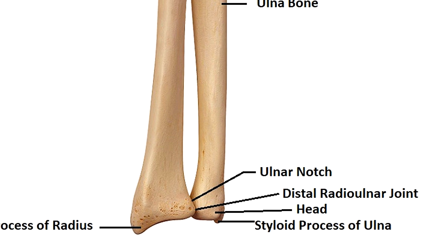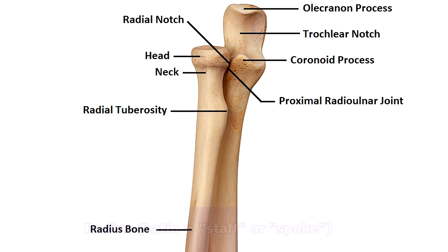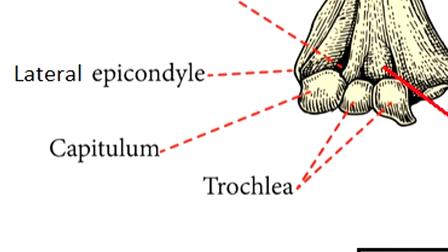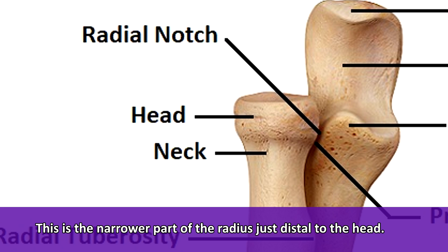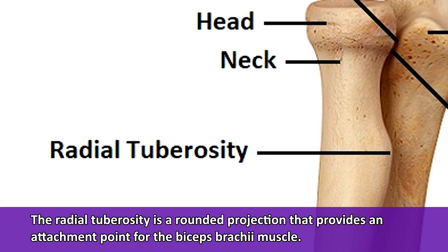Now let's look at the anatomy of the radius — a Latin word meaning staff or spoke. The proximal end of the radius has a rounded cap-like area called the head, with a depression at the top that forms a joint with the capitulum of the humerus. Below the head is the neck, where the radius narrows just distal to the head. Next is the radial tuberosity, a rounded projection that provides an attachment point for the biceps brachii muscle.